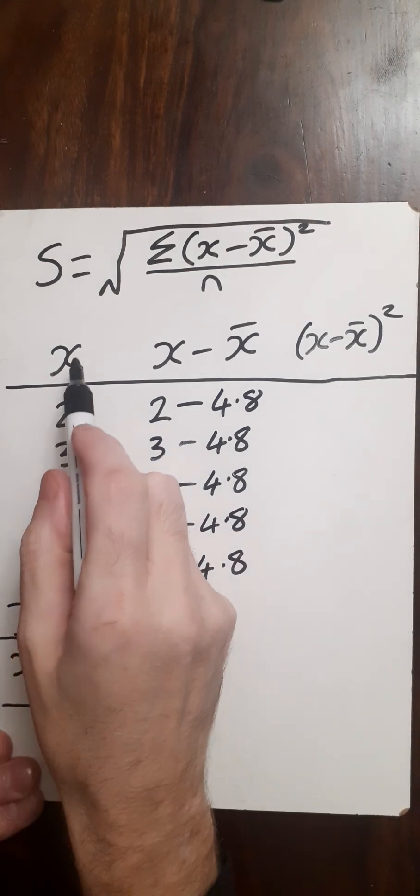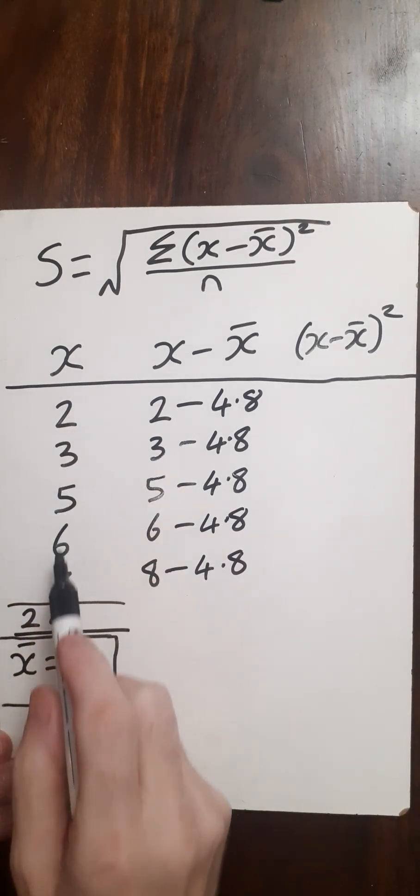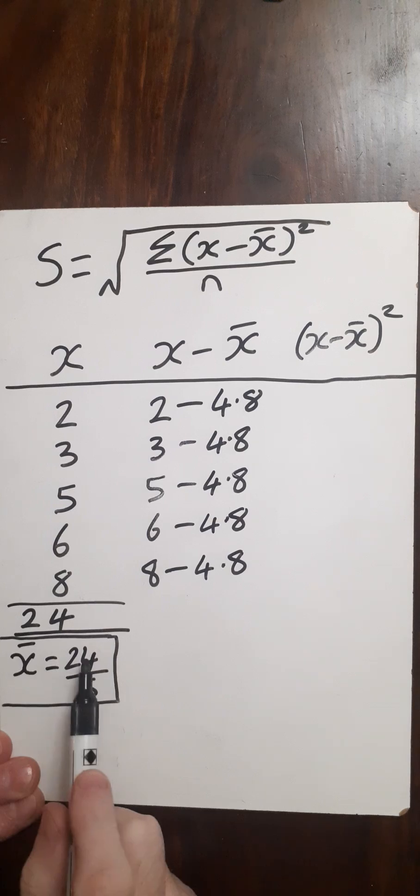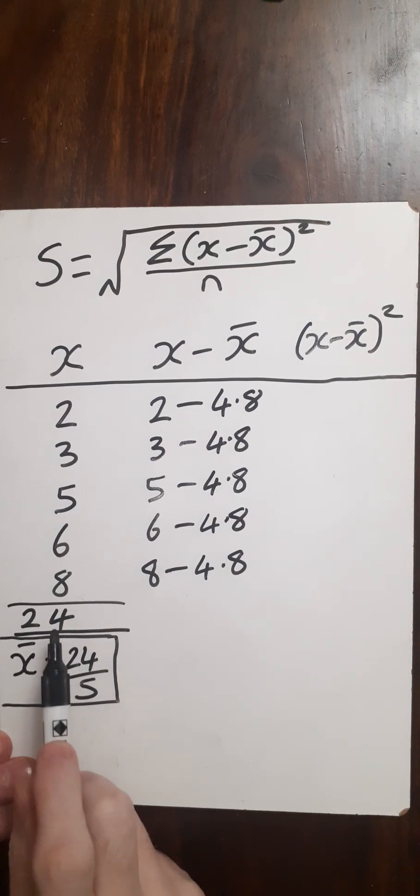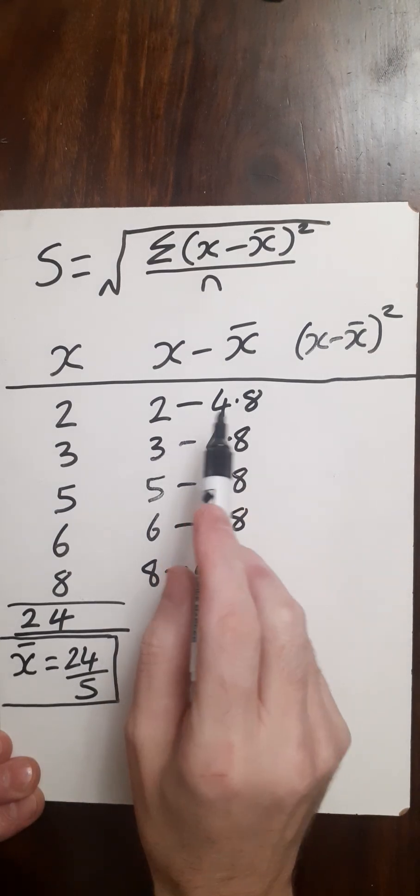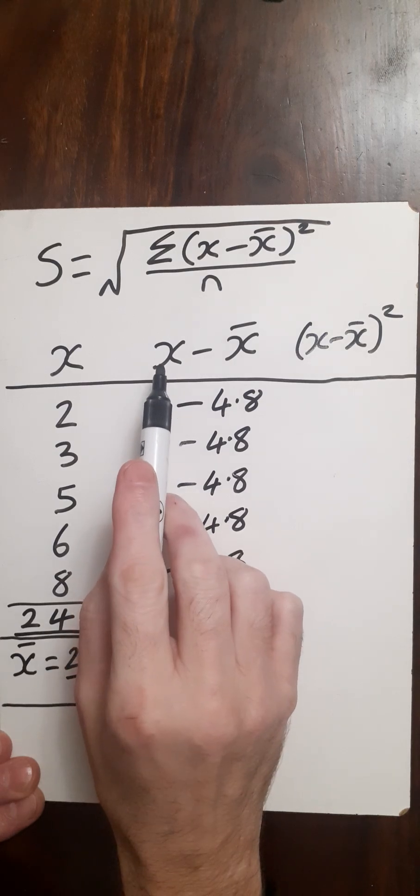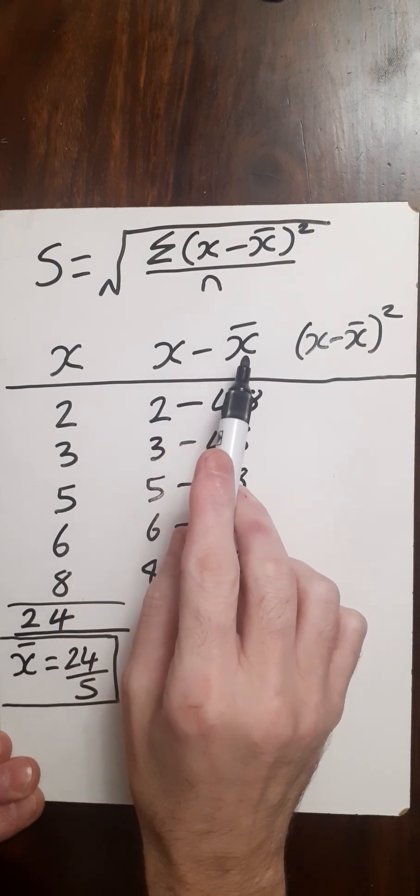So let's calculate the standard deviation of this data. These are my five data points and I've calculated the mean already, the total divided by how many there is, which gives us 4.8. So my first calculation is X minus X bar, which is the mean.